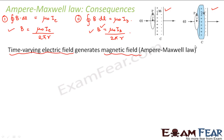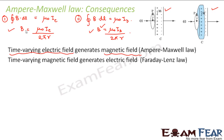The final conclusion is that a time-varying electric field can generate a magnetic field, and a time-varying magnetic field can also generate an electric field — the latter given by Faraday-Lenz law, the former by Ampere-Maxwell law. It has become a two-way process: electric field generates magnetic field and magnetic field generates electric field. This is the main concept and the baseline of electromagnetic waves.